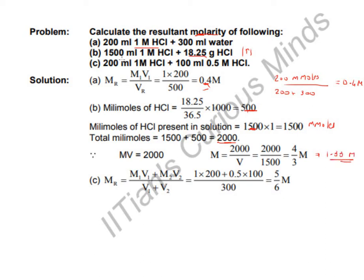Both cases were different. Now the third case: 200 ml 1 molar HCl and 100 ml 0.4 molar HCl. Both are aqueous solutions with two different concentrations of HCl. To find the resultant concentration the formula is: (M1×V1 + M2×V2) / (V1 + V2). This represents millimoles of the first mixture plus millimoles of the second mixture, divided by the total volume.